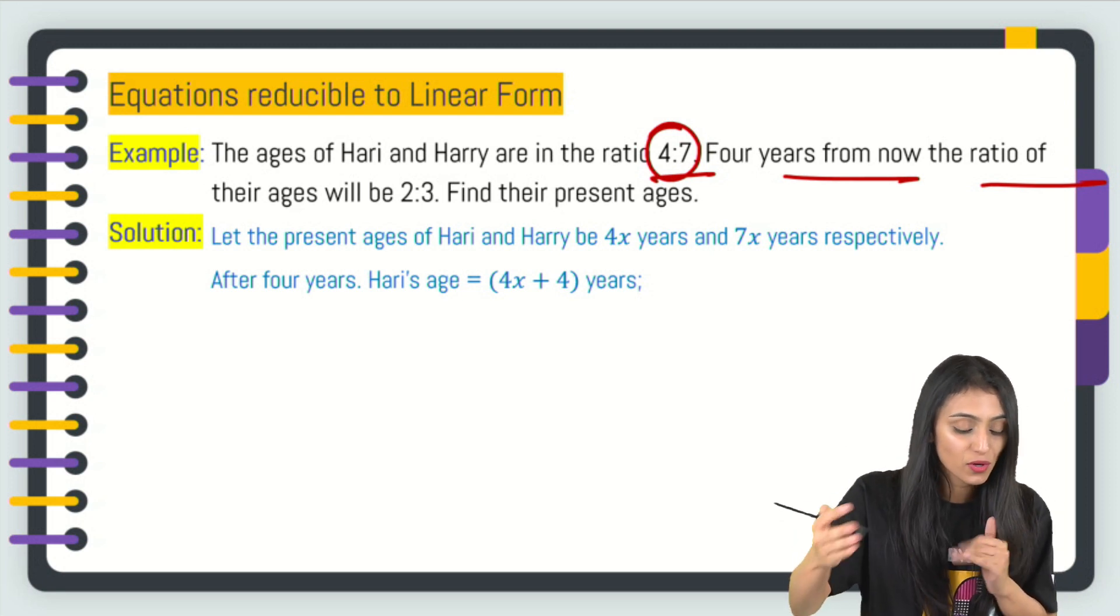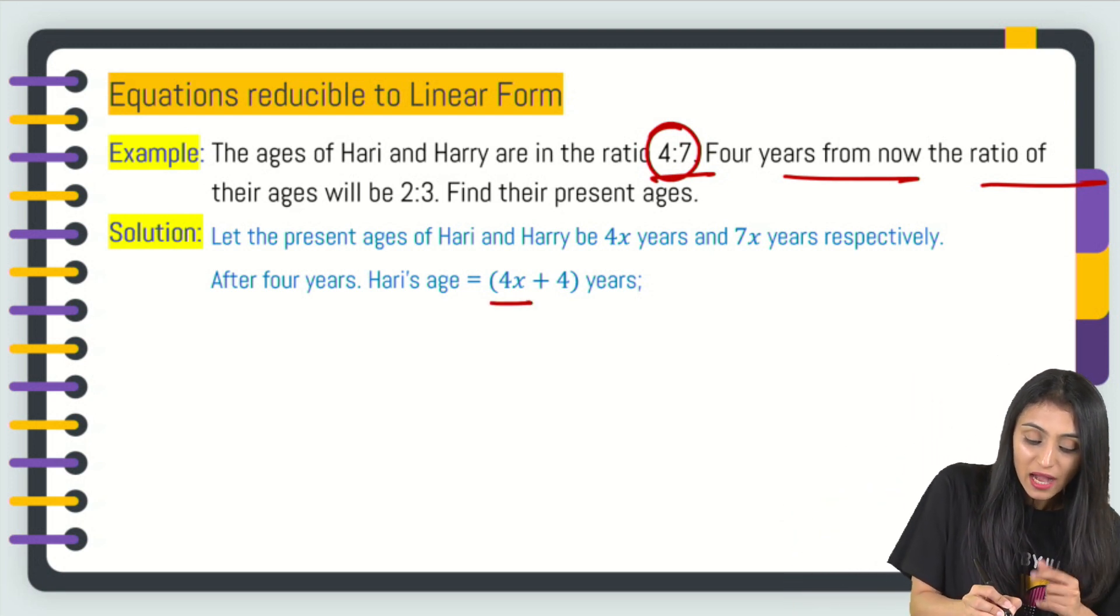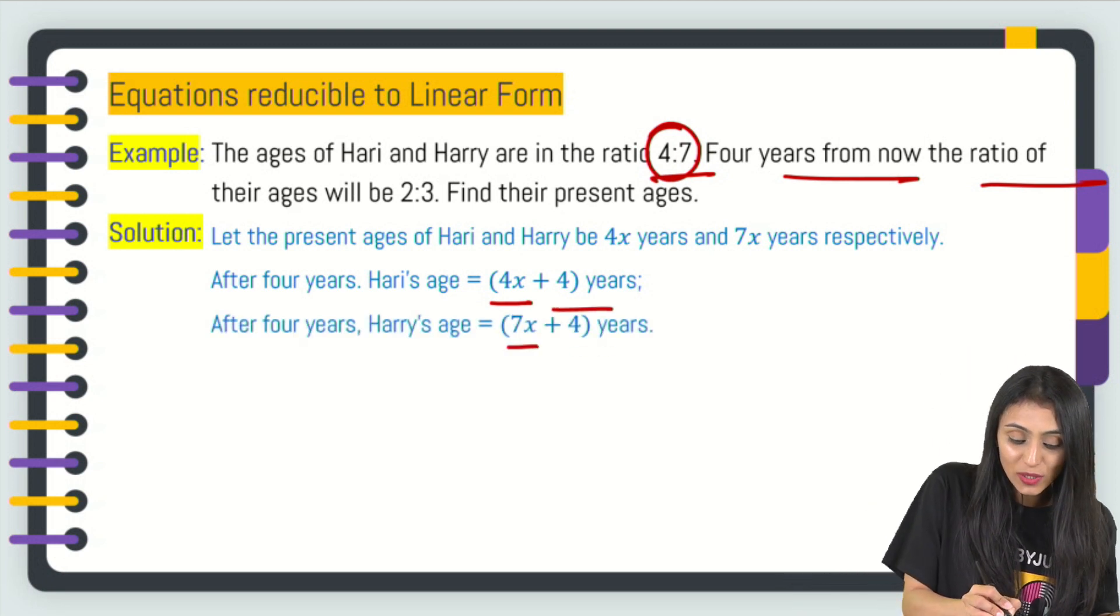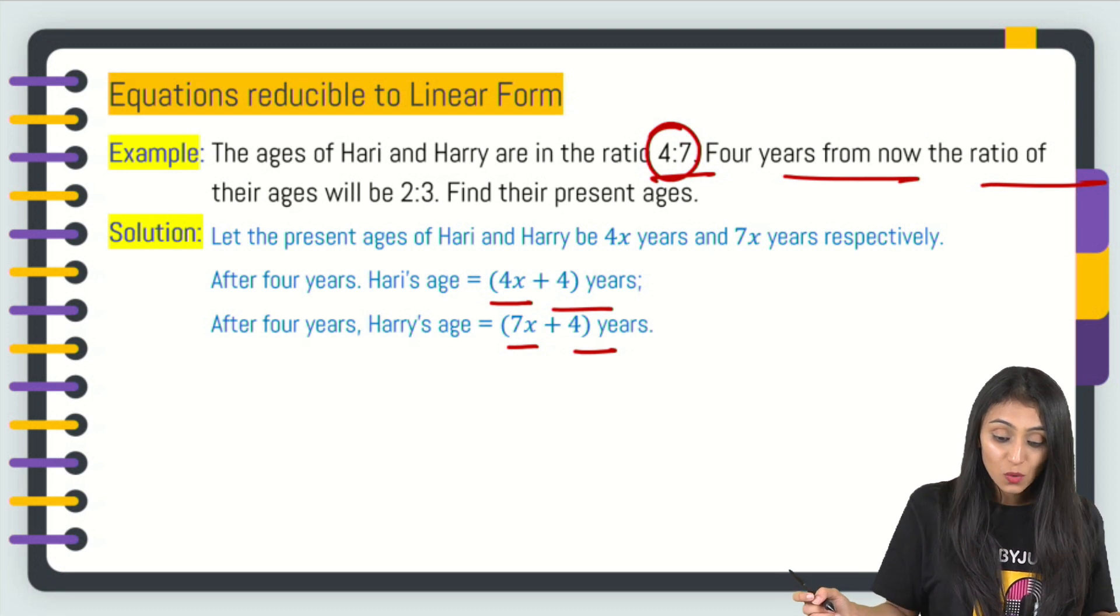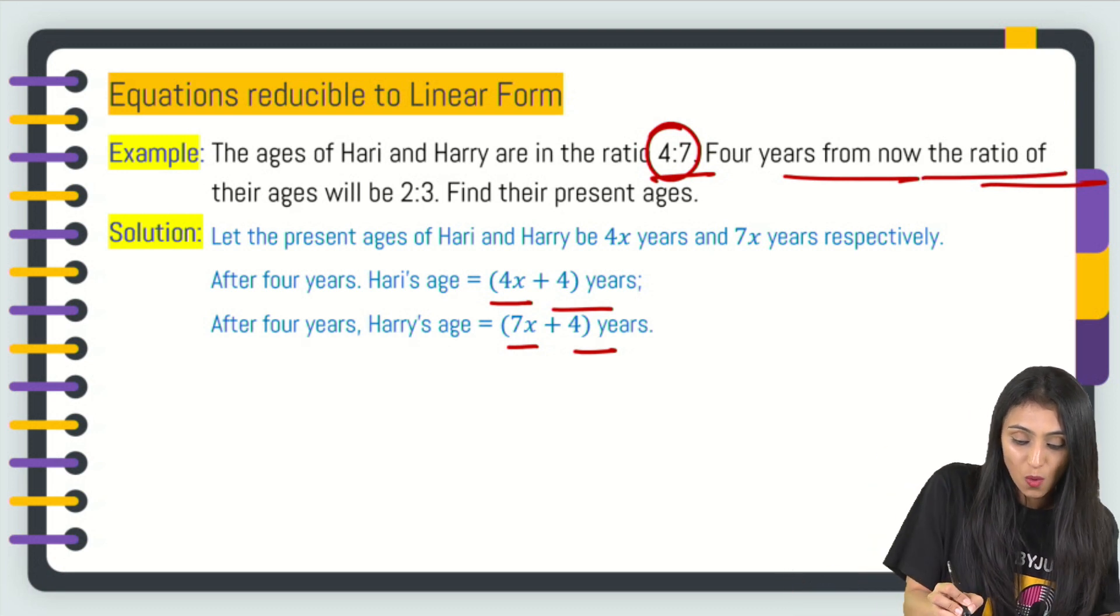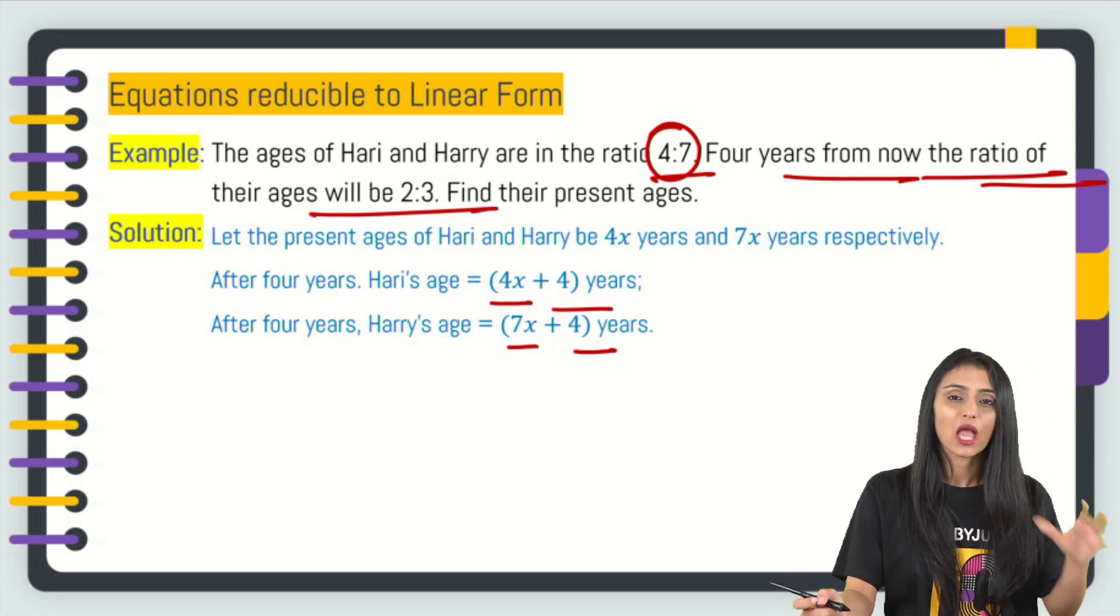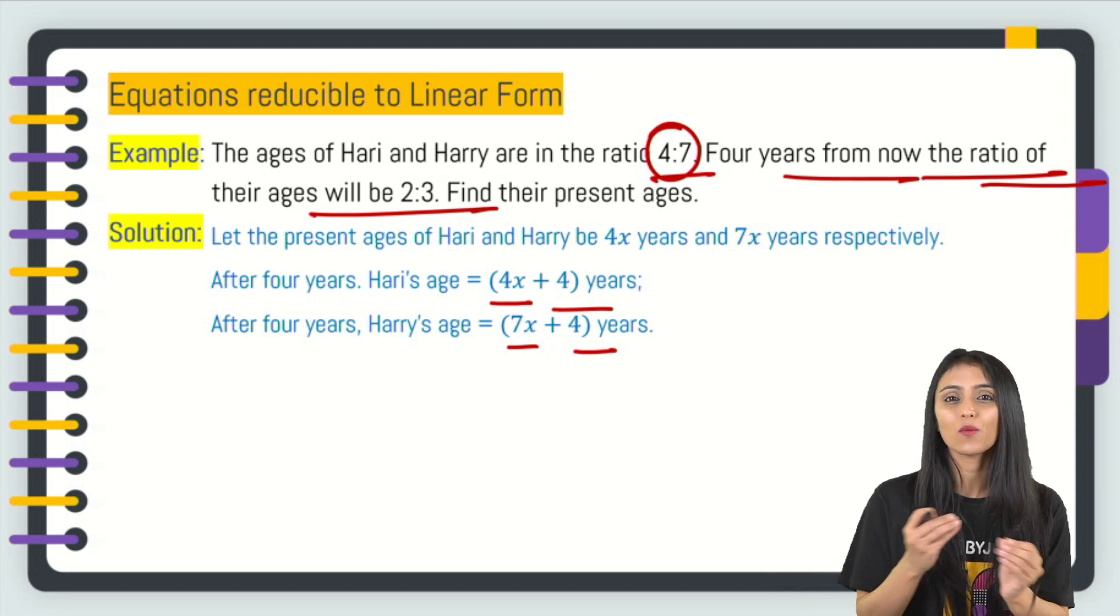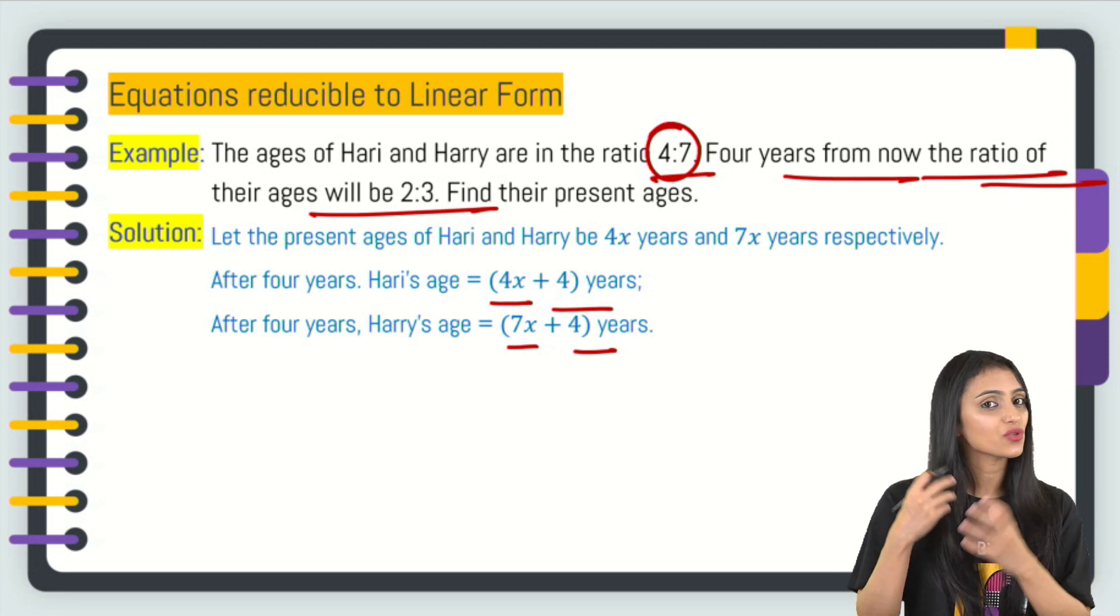Similarly here as well, Hari's age 4 years from now is going to be (4x + 4) years. Similarly, Harry's age is going to be (7x + 4) years. Now the question says 4 years from now the ratio of their ages would be 2:3. What I'm doing here is I'm just doing the literal translation of the statement—the word-by-word translation of the statement. I'm just writing that down in the mathematical form.